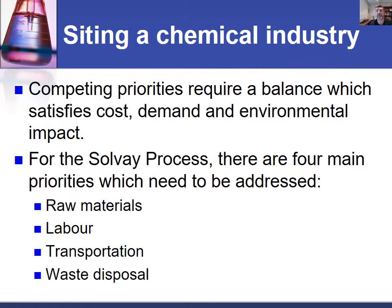In terms of the Solvay process — and these specifics generally apply to all industrial chemical processes — there are four main priorities which we'll unpack through this video, and they are raw materials, labor, transportation, and waste disposal. Each of these are important in terms of considering where we're going to site our chemical industry.